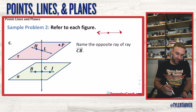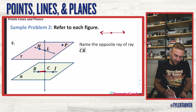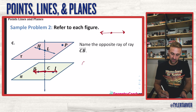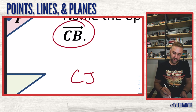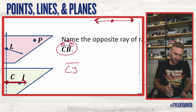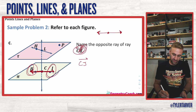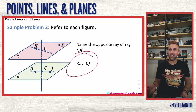Name the opposite ray of ray CB. Ray CB goes from C to B and extends forever in that direction. An opposite ray would go the other way from point C — so ray CJ. Remember to put the arrow over J, the side that goes forever. Ray CJ — we did it.